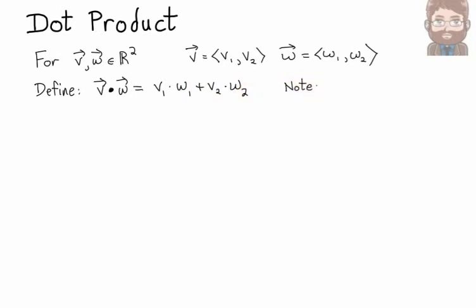Now one important thing to note about this operation: when you take the dot product of two vectors, the result is actually a number or a scalar. The result is not another vector.